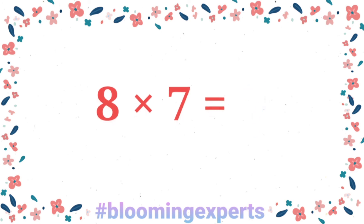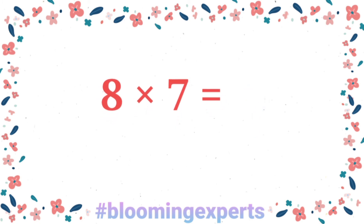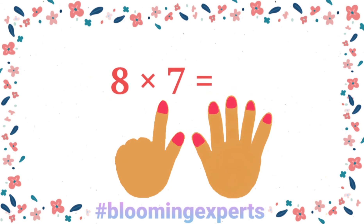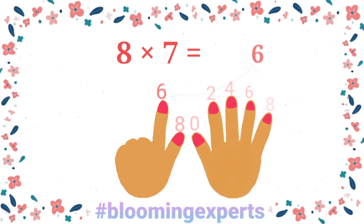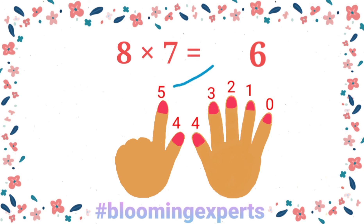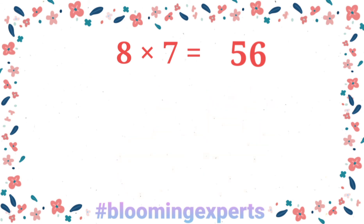Let's now find the ones digit in the product of 8 times 7. Counting: 8, 6, 4, 2, 0, 8, 6 — so the ones digit is 6. For the tens digit: 0, 1, 2, 3, 4, 5 — so the tens digit is 5. The whole number is 56.